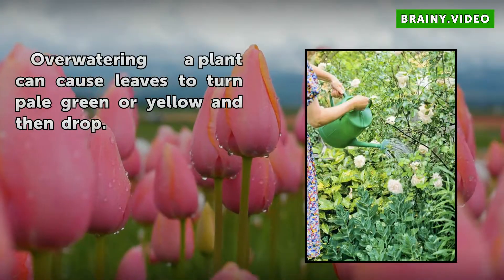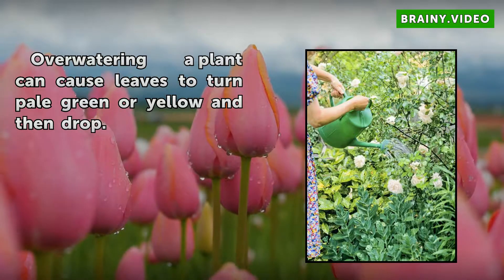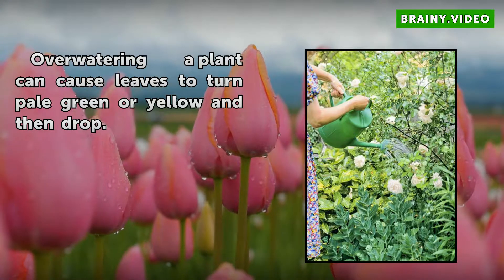Overwatering: Overwatering a plant can cause leaves to turn pale green or yellow and then drop.